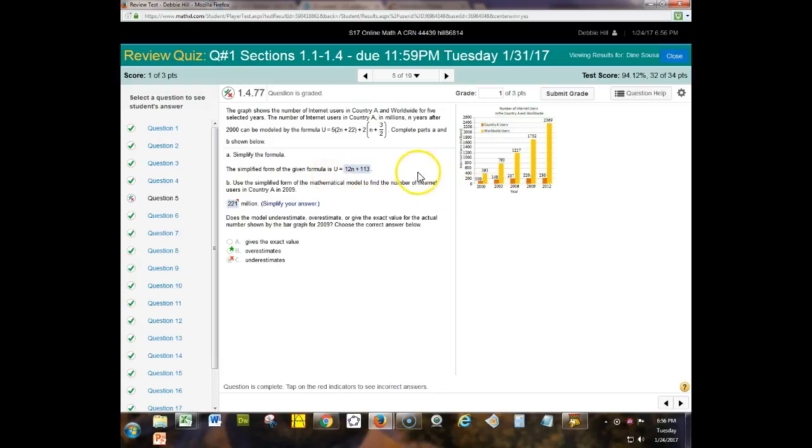This is the graph, this is the mathematical model. So what they're asking you to do is use this model to find the number of internet users in country A in 2009.